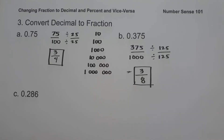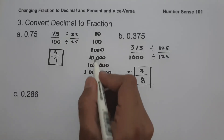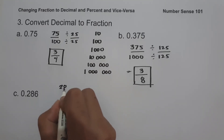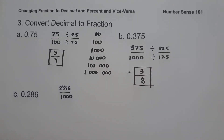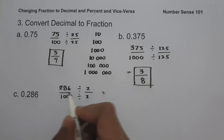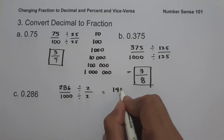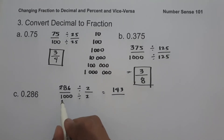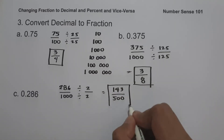On letter C, we have 0.286. Since we have three decimal places, we use 1,000 as our denominator. So this is 286 over 1,000. The greatest common factor is 2. 286 ÷ 2 = 143 and 1,000 ÷ 2 = 500. So our answer is 143 over 500.